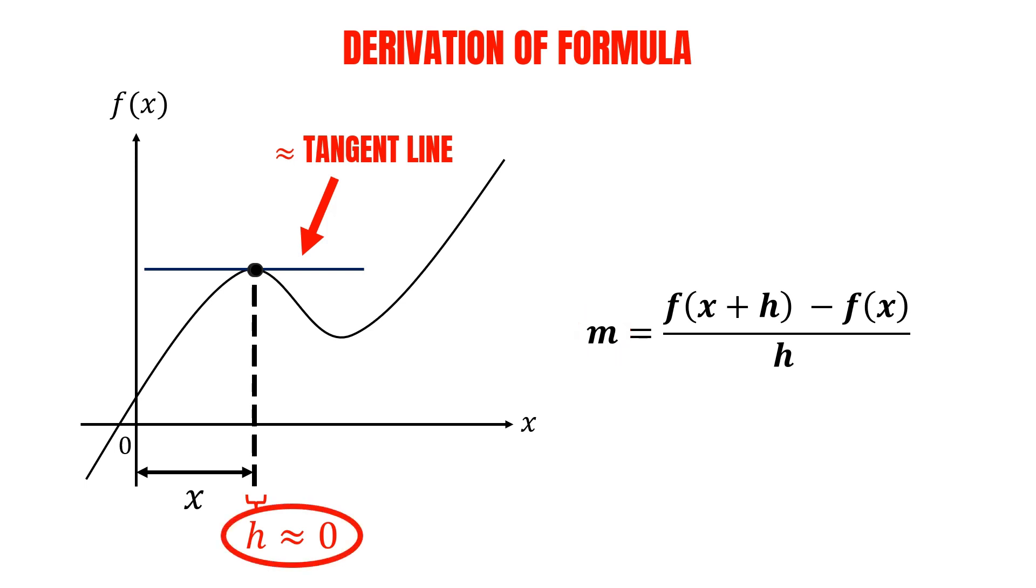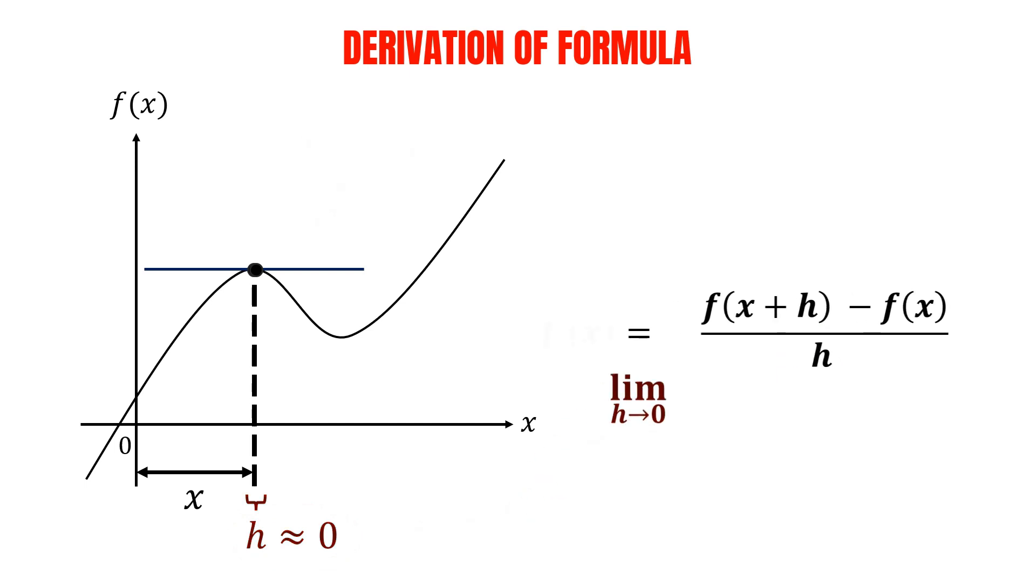Therefore, it is important to make sure that the distance between the points is very small, which is close to zero, but we know that it must not be exactly zero, as this would result in division by zero in the denominator, which is impossible. As such, this can be represented by the limit of h approaching zero. And that's why we have this limit in the formula for the first principle of derivatives.